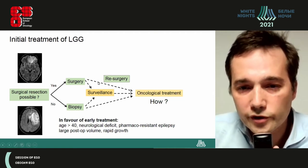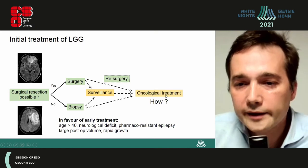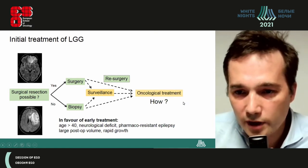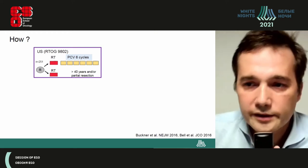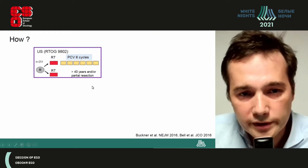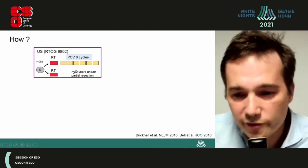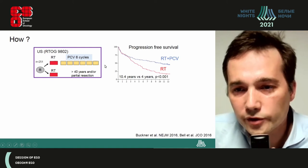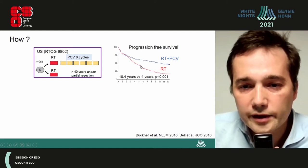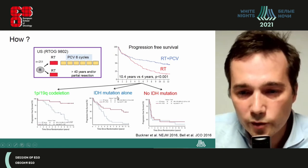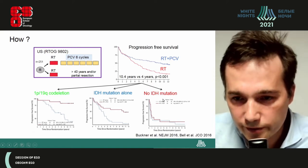Patients who have undergone surgery can undergo re-surgery if possible, but at some point an oncological treatment will have to be given. To answer which treatment, there are two clinical trials. The first trial, conducted in the US, compared radiotherapy alone to radiotherapy plus adjuvant PCV chemotherapy. This trial demonstrated that adding PCV greatly improves progression-free survival in patients with oligodendrogliomas and astrocytomas, but not in IDH wild-type low-grade gliomas. Importantly, this study also demonstrated that adding PCV to radiotherapy improved overall survival in this high-risk population.